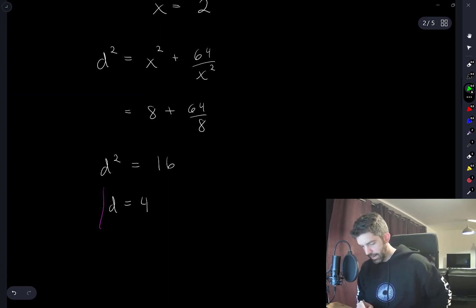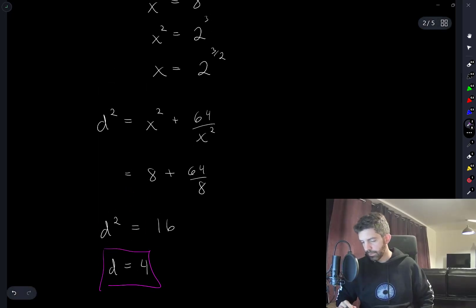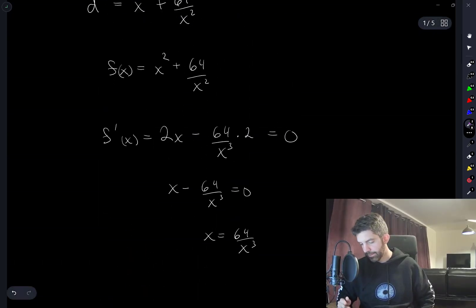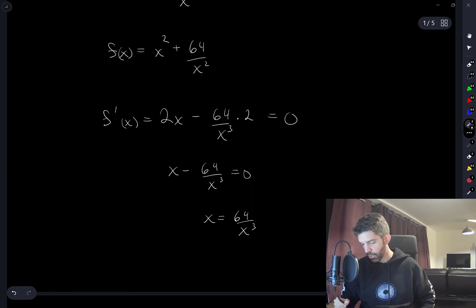I end up with a minimum distance of 4 just by working through the computations. Taking the derivative was more or less straightforward. Hope I didn't make any silly mistakes there. We set it equal to zero and solve for x.